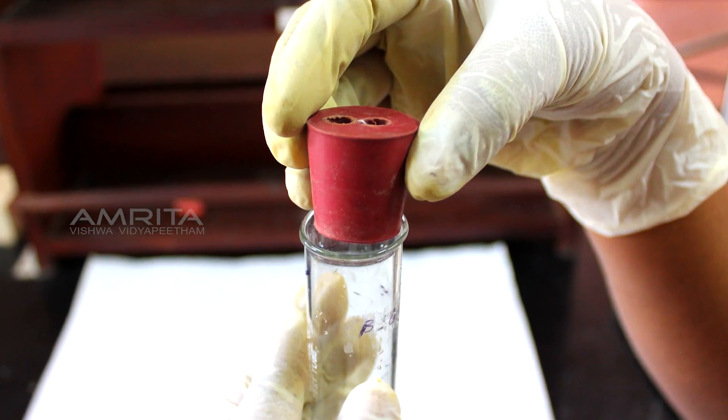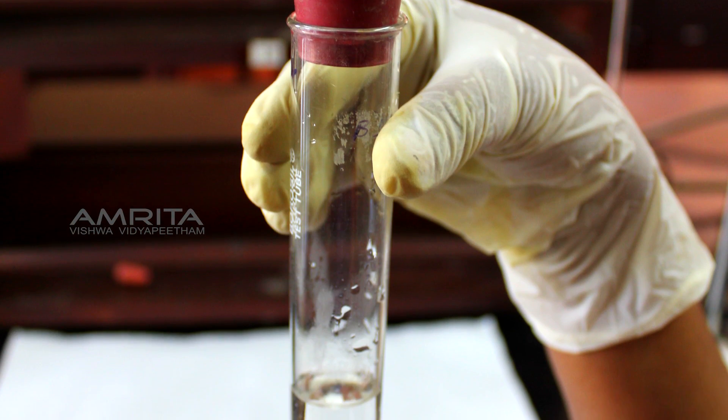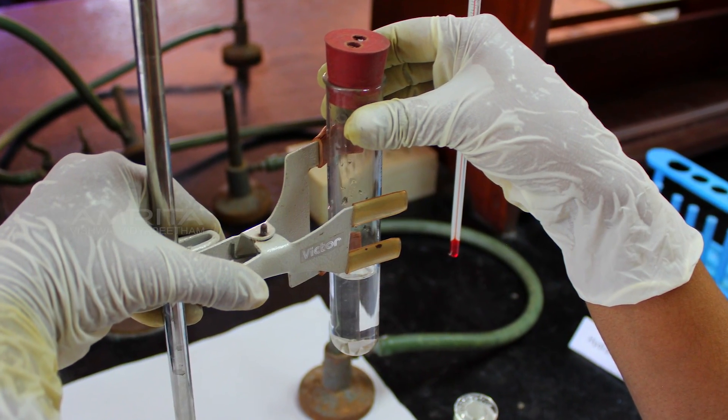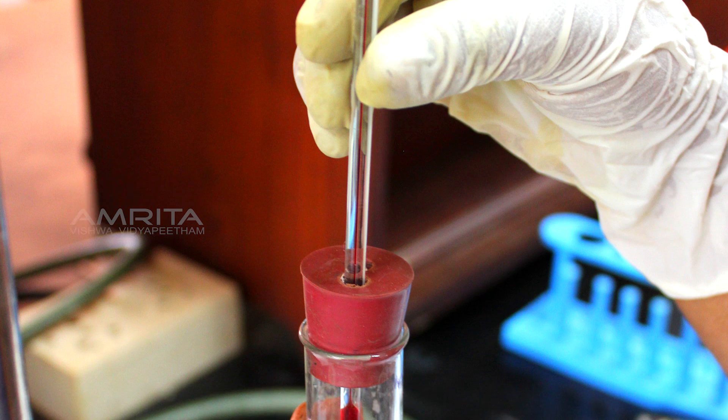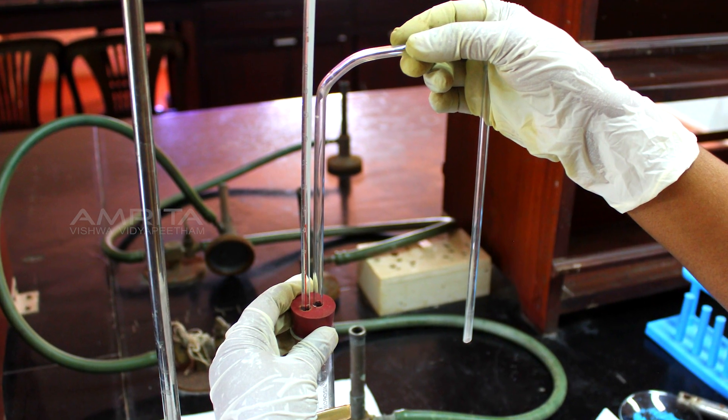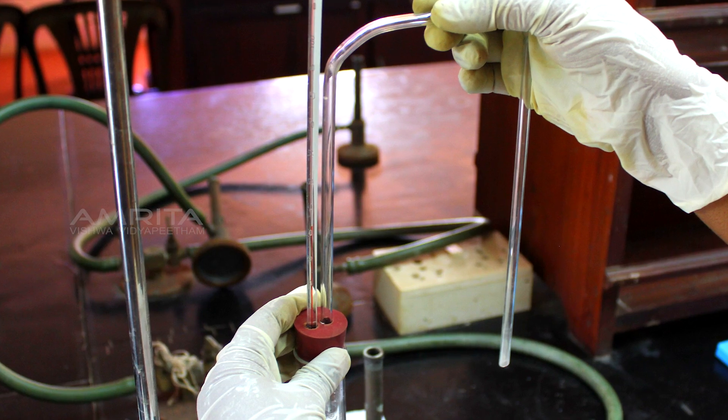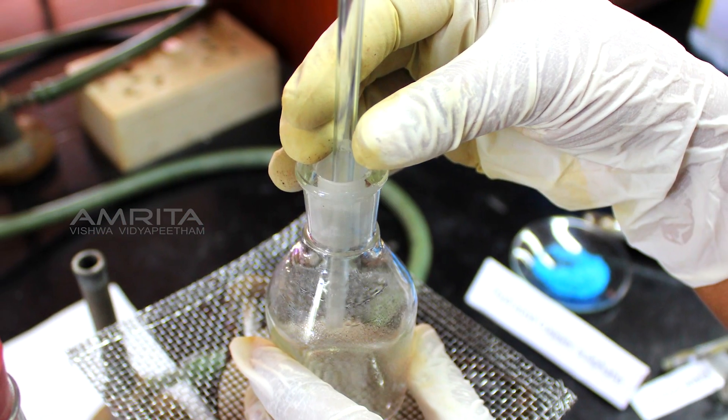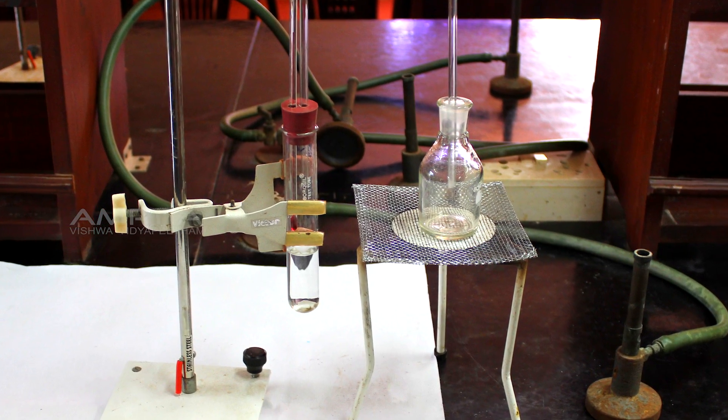Fix a cork with two bores in the mouth of the boiling tube and clamp the tube to the stand. Insert a thermometer through one of the bores of the rubber cork and a delivery tube through the other bore. Insert the other end of the delivery tube in a bottle to collect the condensed water.